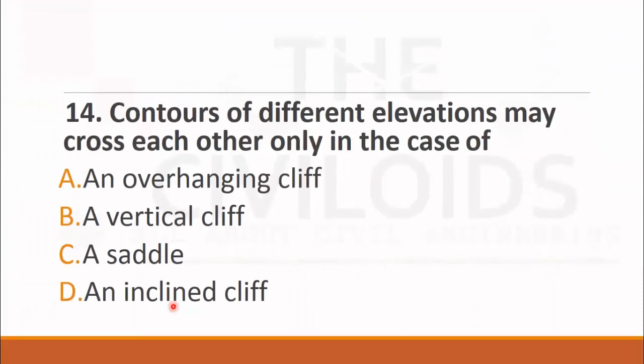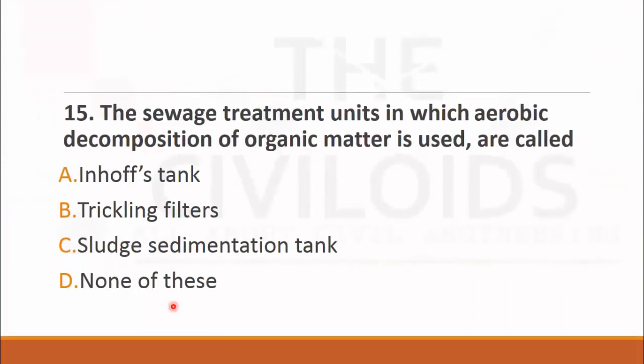Question number fourteen: Contours of different elevations may cross each other only in the case of. The choices are: A. an overhanging cliff, B. a vertical cliff, C. a saddle, and D. an inclined cliff. We know that contour lines do not cross each other, but when contour lines cross each other it means that it is an overhanging cliff. The right choice is A. overhanging cliff.